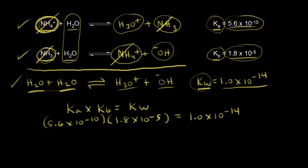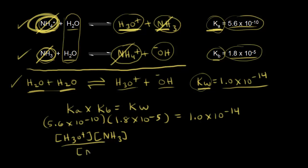Let's go into more detail. Ka is products over reactants, which would be the concentration of H3O+ times the concentration of NH3, all over the concentration of NH4+. So Ka equals [H3O+][NH3] / [NH4+].